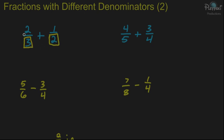Let's start with the two-thirds. We need to change that so that it has a 6 on the bottom. So you're going to multiply that by 2, and you have to do the same thing to the top. So you'll get 4 over 6. Two-thirds is the same thing as 4 over 6.